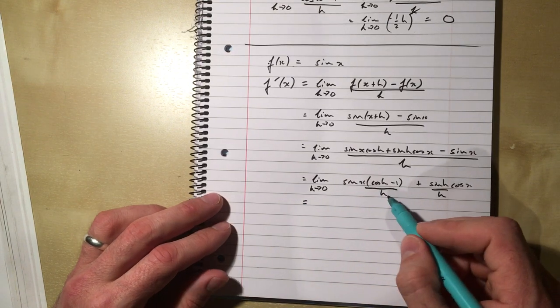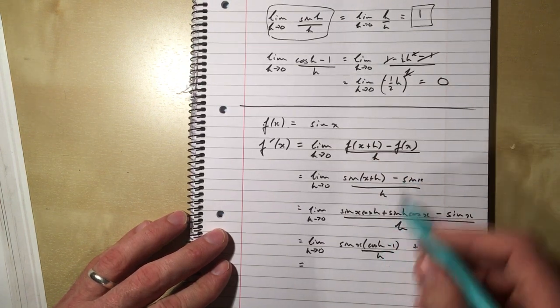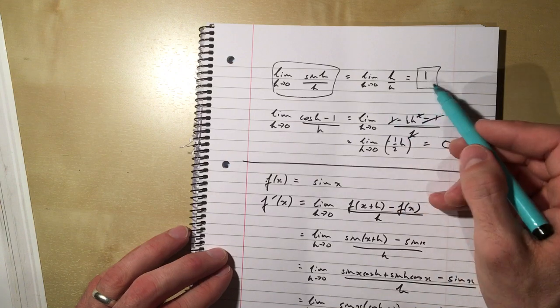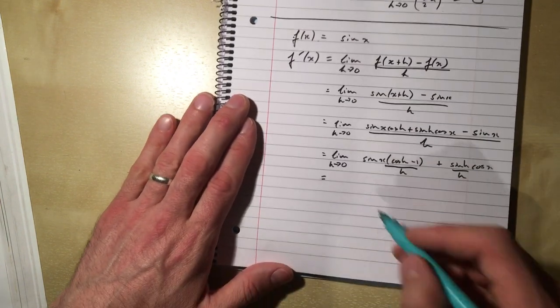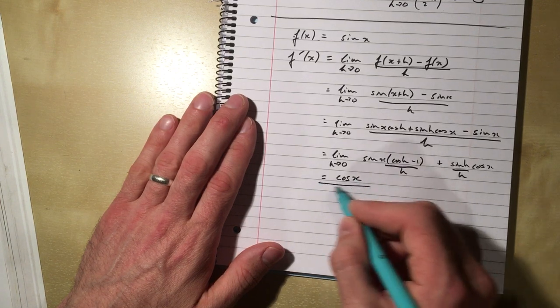Now, cos h minus 1 over h, we've just proved the limit as that tends to 0 is 0. So this bit here is going to vanish. And we just said limit of sine h over h is 1. So sine h over h tends to 1. So all of this, like here, differentiates to cos x.